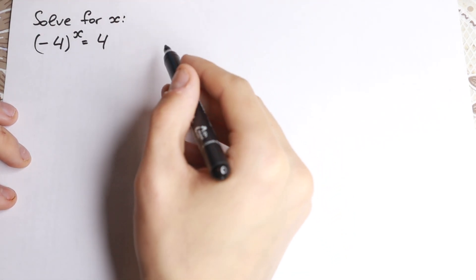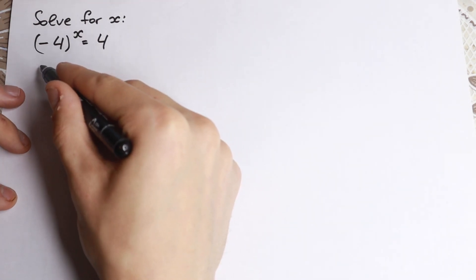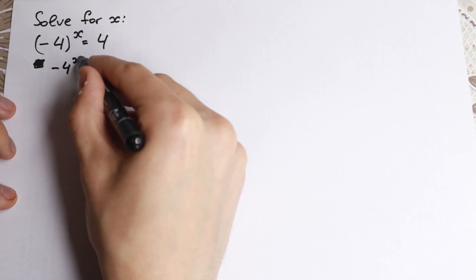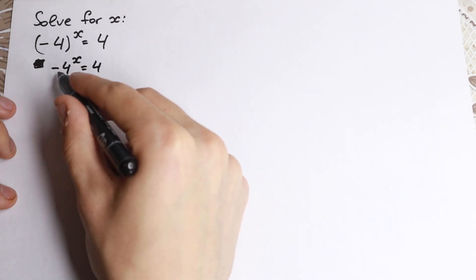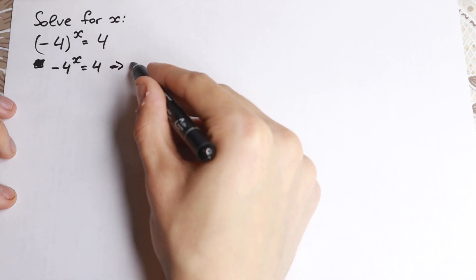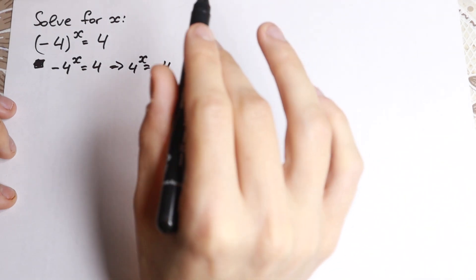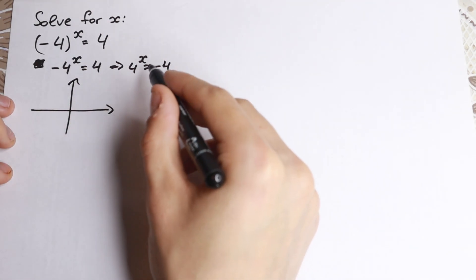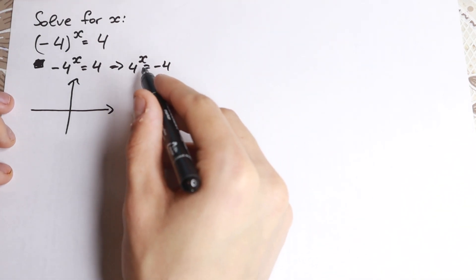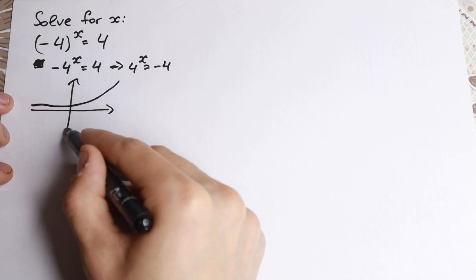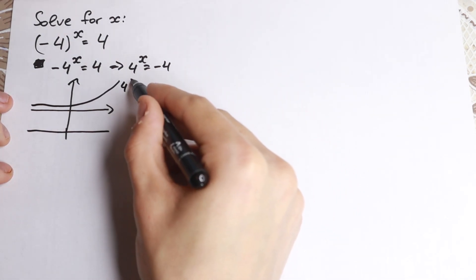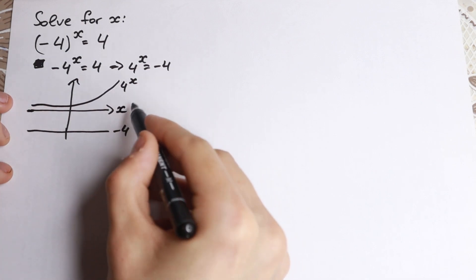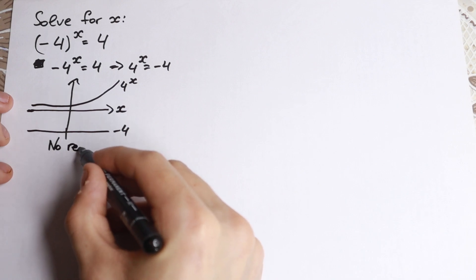First of all, if we don't have any parentheses, we write it as a special case: minus 4 to the x equal to 4. We multiply by minus 1, so we get 4 to the x equal to minus 4. I want to draw a graph here, because this gives a good geometrical interpretation. We have 4 to the x as an exponential function, and minus 4 as our constant. As a result, there's no point of intersection, so we have no real roots. But this was a special case where we rejected the parentheses.